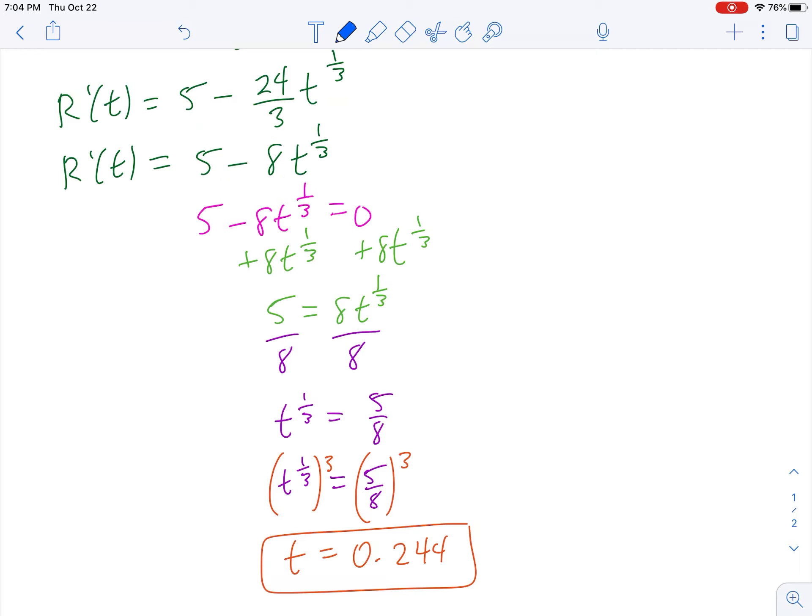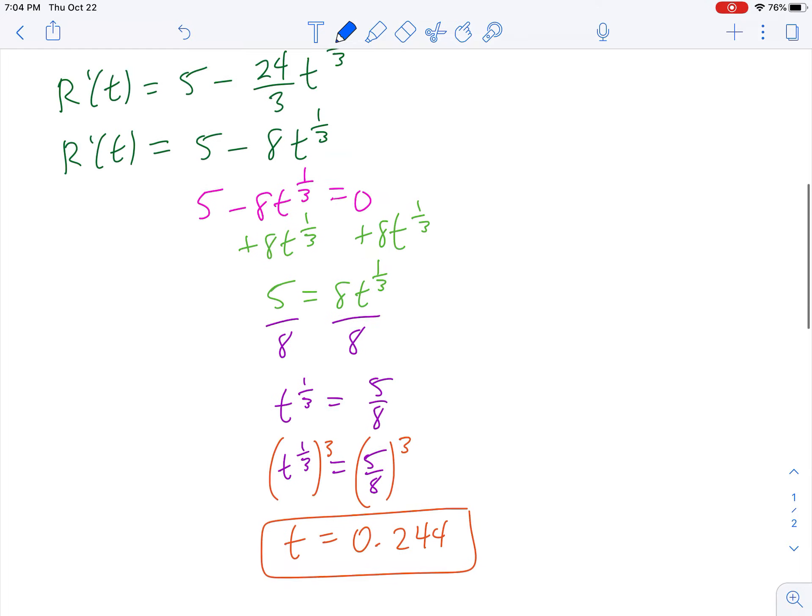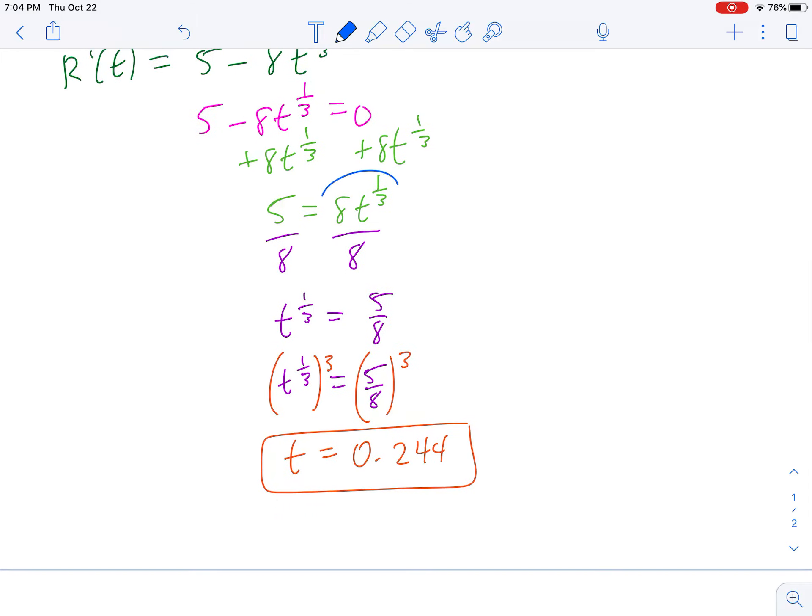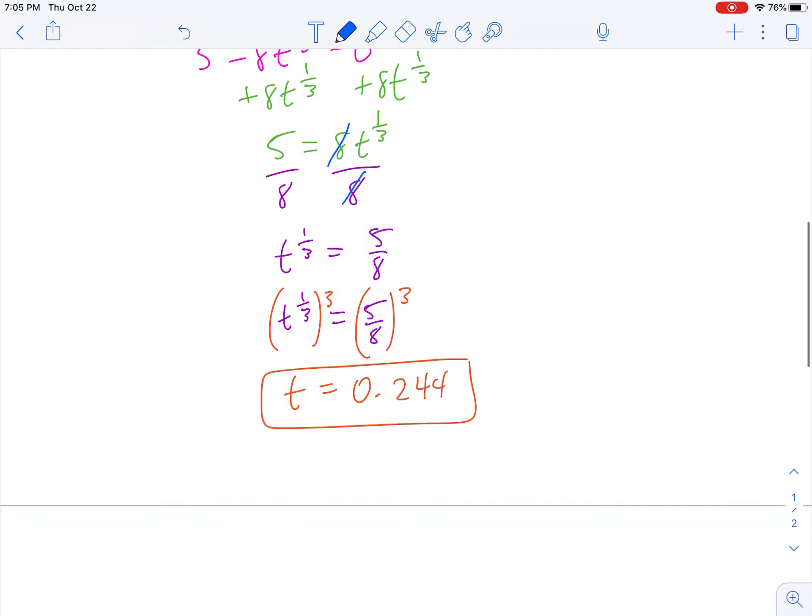To find the value that will maximize the revenue for the government, we set this equal to 0, and we begin by adding 8t to the one-third power on both sides. Once we've added 8t to the one-third power to the other side, we're ready to divide both sides by 8.